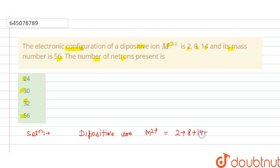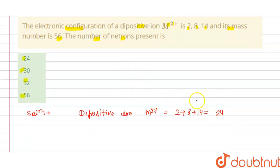We have subtracted 2 from it, so that this is diapositive ion.